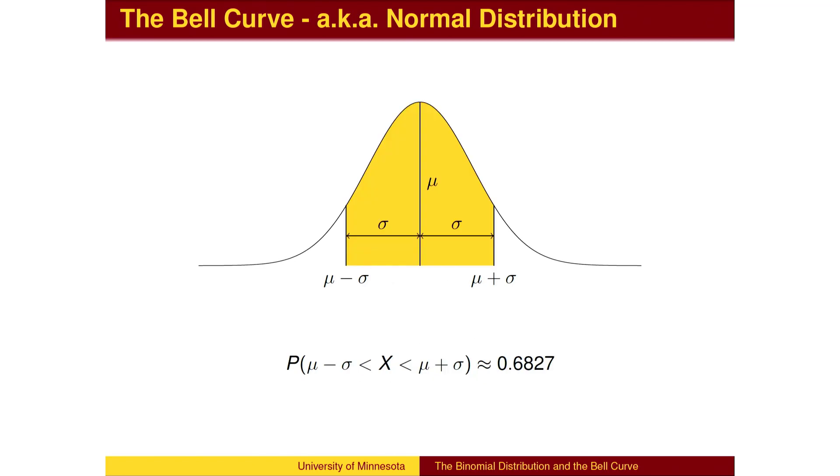Once the mean and standard deviation are known, every bell curve has some standard values. 68% of the population falls within one standard deviation of the mean.